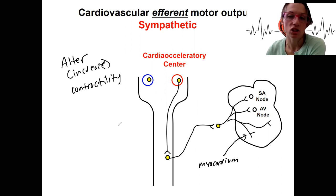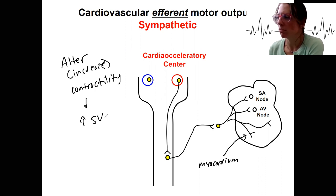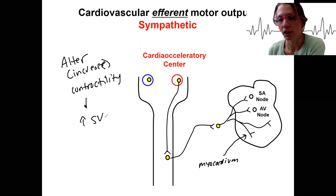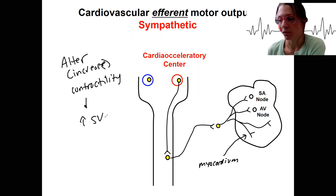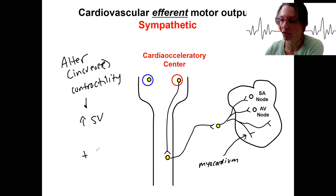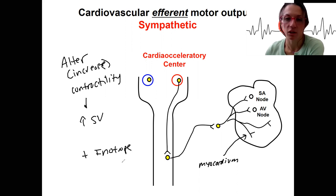So in addition to changing heart rate, we are going to increase stroke volume. And this is through the same receptors — norepinephrine, epinephrine — we're talking about the adrenal medulla hormone binding to beta receptors. This is going to be a positive inotrope.